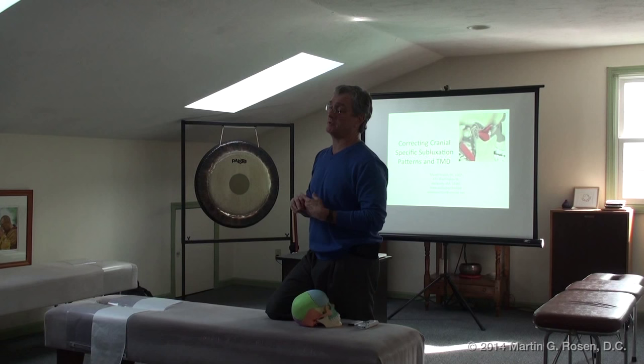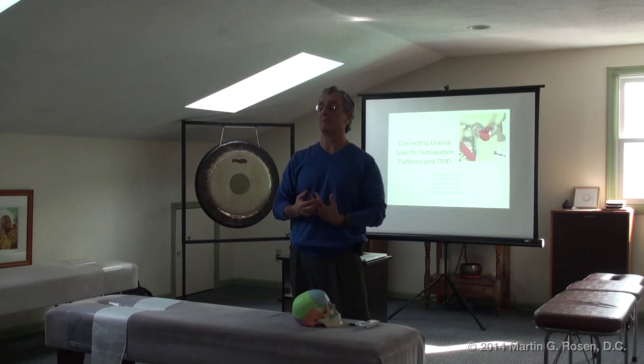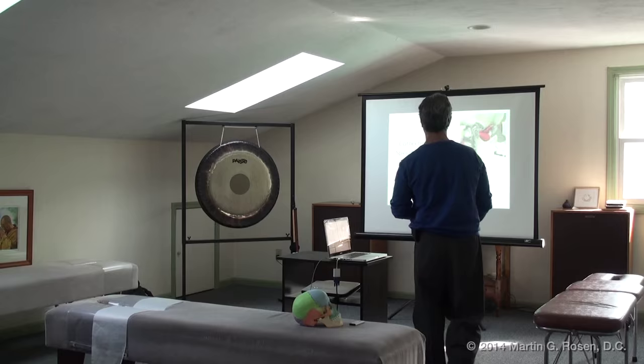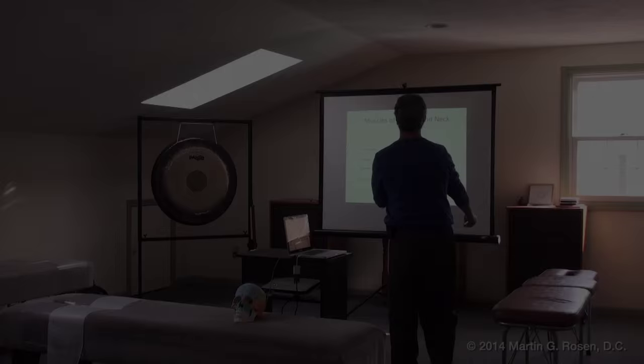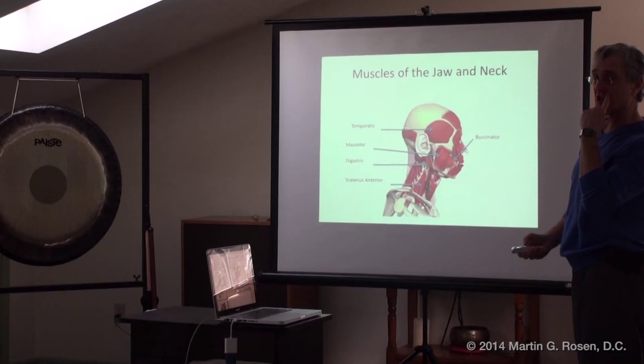The actual temporomandibular joint adjusting is going to be the last thing we do. We're going to set up the whole cranium so that when we make that adjustment, it's a much quicker and easier process. These are the muscles we're looking at. We've got a temporalis muscle here, around the temporal — there's an anterior and posterior portion, and we'll talk about how that works in a while.